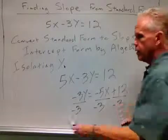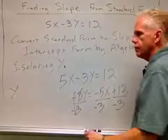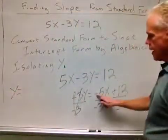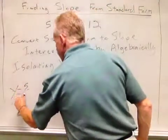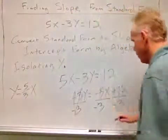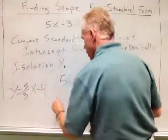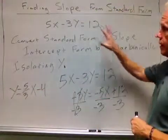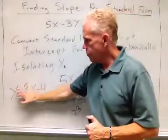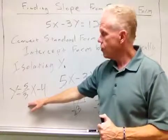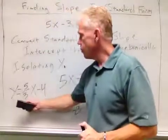When I divide by negative 3 across the board, the negative 3s cancel out. Negative divided by negative is positive, so these negatives cancel out. I get y equals 5/3x, and then positive 12 divided by negative 3 is negative 4. So we've taken this equation and through the algebraic process converted it into this format. Remember, this format is slope-intercept form.